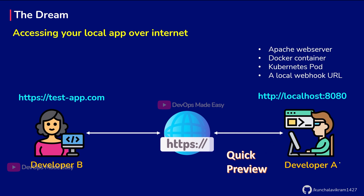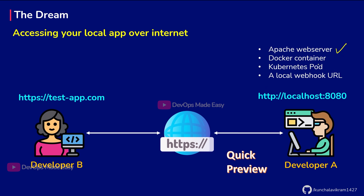Let's say there are two developers, developer A and developer B, and developer A wants to show his application to developer B. In this case developer A has to deploy the application in any of the public clouds such as AWS, GCP or Azure so that he'll get a public URL which he can share with developer B to access his application. The application can be a simple Apache web server serving a static HTML page, a Docker container, a Kubernetes pod, or even a local webhook. In this video we'll see how to get a public URL using ngrok without deploying your application in any of the public clouds.